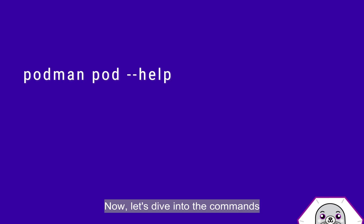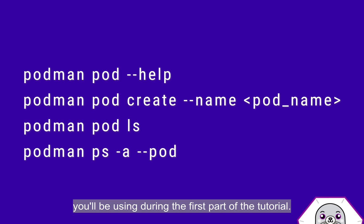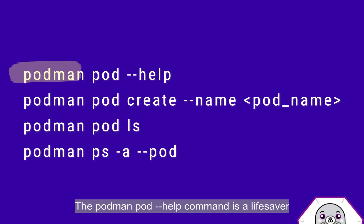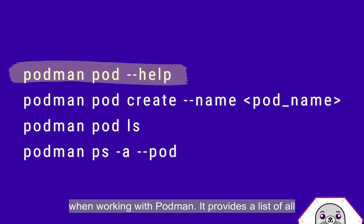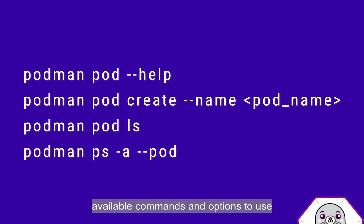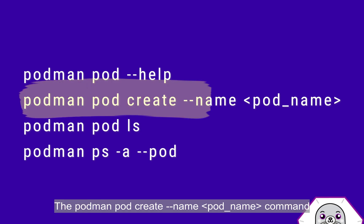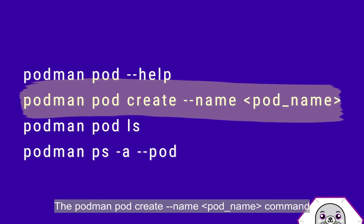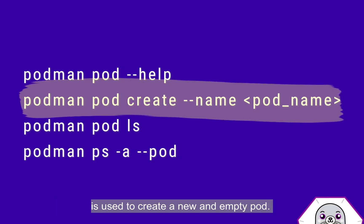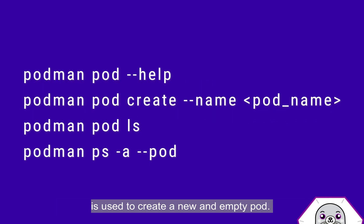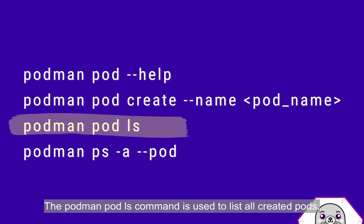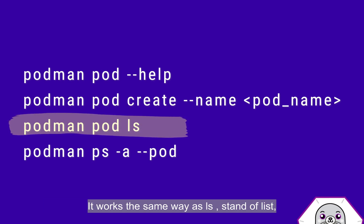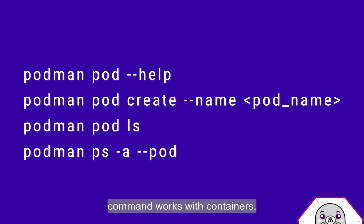Now let's dive into the commands you will be using during the first part of the tutorial. The podman pod help command is a lifesaver when working with Podman. It provides a list of all available commands and options to use when working with pods. The podman pod create command with the name flag is used to create a new and empty pod. The podman pod ls command is used to list all created pods — it works the same way as the ls command works with containers.